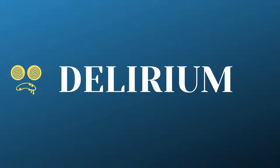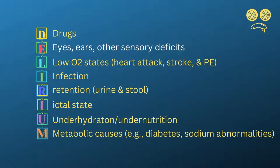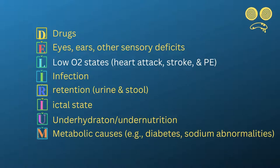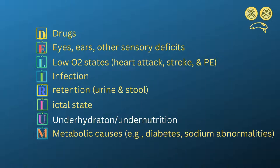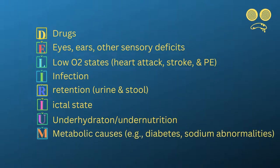Now, remember this mnemonic: DELIRIUM. D for drugs; E for eyes, ears, and other sensory deficits; L for low O2 states such as heart attack, stroke, and pulmonary embolism; I for infection; R for retention of urine or stool; I for ictal state; U for underhydration or undernutrition; and M for metabolic causes, for example, diabetes and sodium abnormalities. These are all factors that are clinically essential for ICU delirium.